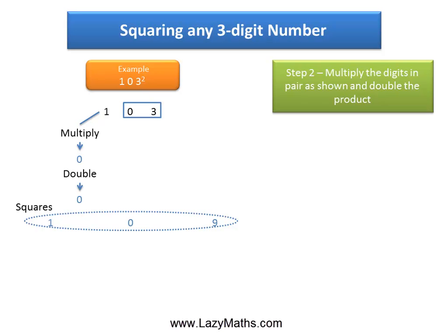Then we take the other pair, 0 and 3. 0 times 3 is 0 again, and we double it. We get 0 one more time because double of 0 is 0.